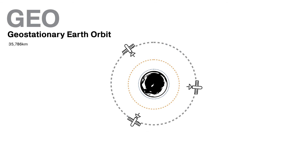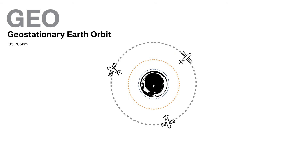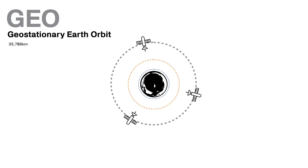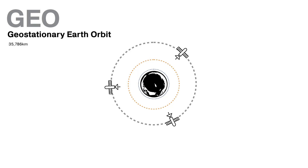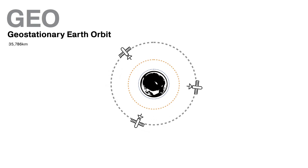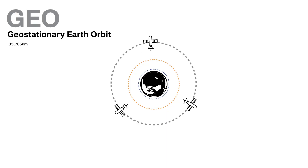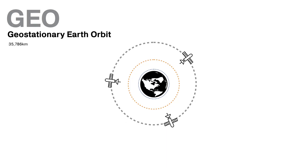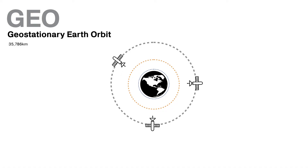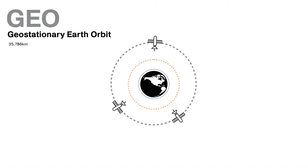Because GEO is such a narrow band and requires fewer satellites to get planetary coverage, it makes GEO a competitive market. Every country only has so many slots for geostationary orbit that they can occupy. And occupying this space can be more expensive and complicated than utilising LEO or MEO. Simply put, for GEO, there's not enough space in space.